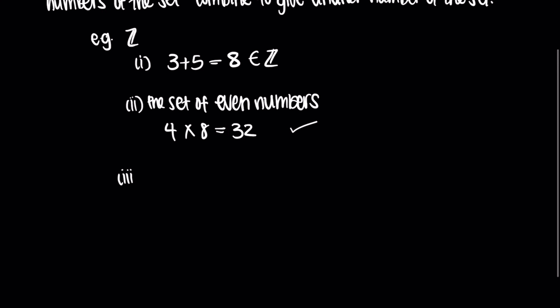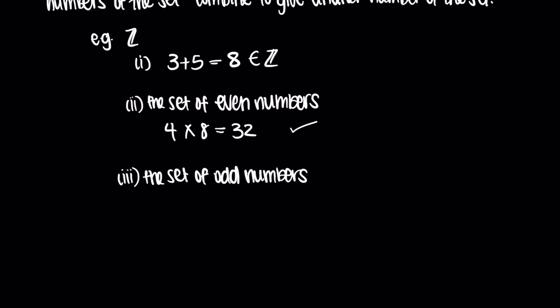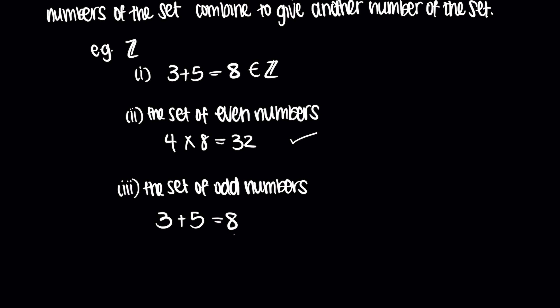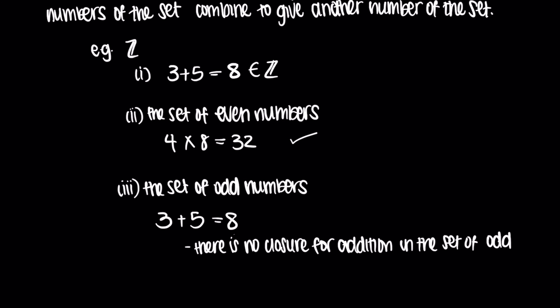Third example: the set of odd numbers, and let's say we're dealing with the operation 3 plus 5. 3 is an element in the set of odd numbers, and so is 5. However, 3 plus 5 is equal to 8, and 8 is not an element in the set of odd numbers. So we say that there is no closure for addition in the set of odd numbers.